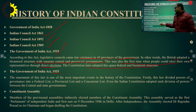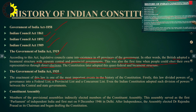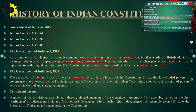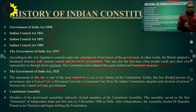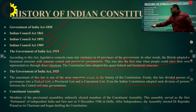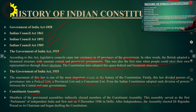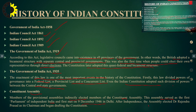The Government of India Act 1935 is one of the most important events in the history of our constitution. This law divided the power of governance into a federal list, a provincial list, and a concurrent list. The Indian constitution adopted such a division of power between the central and state governments. Members of the provincial assembly indirectly elected members of the Constituent Assembly. This assembly served as the first parliament of independent India and first met on 19 December 1946 in Delhi.